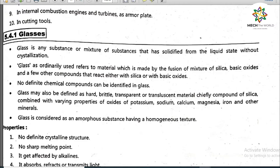Glass may also be defined as a hard, brittle, transparent or translucent material, chiefly a compound of silica combined with varying proportions of oxides of potassium, sodium, calcium, magnesium, iron, and other minerals. Glass is considered an amorphous substance having a homogeneous texture. By nature, glass is very hard and brittle, and it will accept and mix with any color added to it.